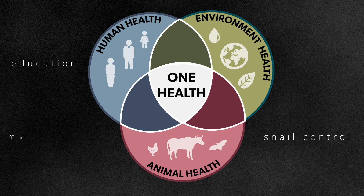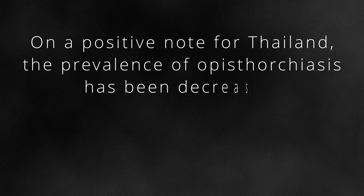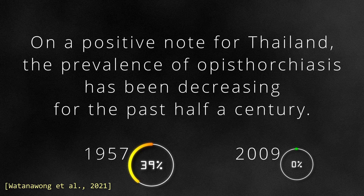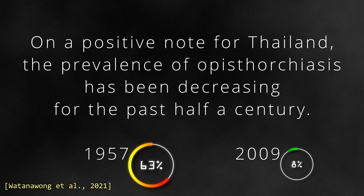Additionally, mass deworming campaigns are being conducted in some endemic regions to reduce the prevalence of infections, particularly in high-risk populations. On a positive note for Thailand, the prevalence of opisthorchiasis has been decreasing for the past half a century, from about 63% in 1957 to around 8% in 2009. This is mainly due to the Liver Fluke Control Program, which was started in the country in 1984 and has three main strategies: active detection and treatment of infected cases to reduce human host reservoirs; health education focusing on promotion of consumption of cooked fish to prevent infections; and improvement of defecation structures to interrupt disease transmission.